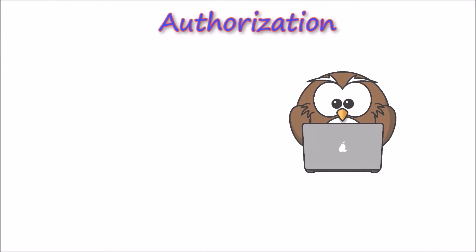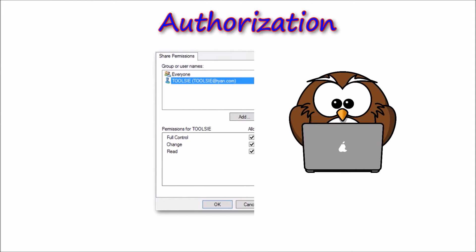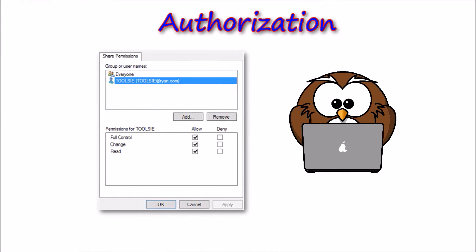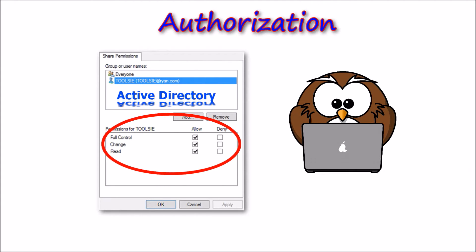Authorization deals with the privileges given to a specific user and it comes after authentication. What a user can and cannot do is determined by the authorization process. This is one of the main purposes of Microsoft's Active Directory.